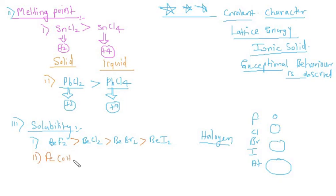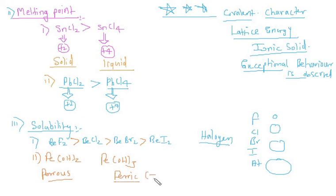Second example: Fe(OH)₂ vs Fe(OH)₃, also called ferrous hydroxide and ferric hydroxide. Ferric means the +3 oxidation state and ferrous means the +2 oxidation state. In the +3 oxidation state, covalent character is more, so obviously the solubility of Fe(OH)₂ will be more than Fe(OH)₃.